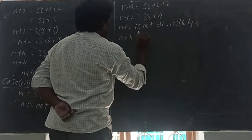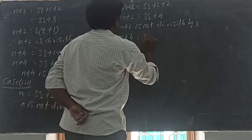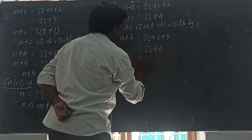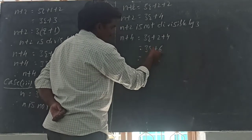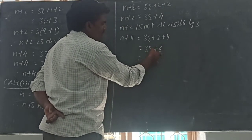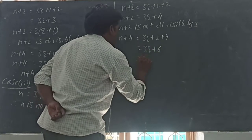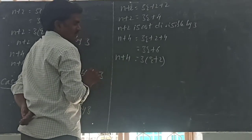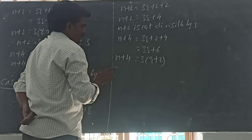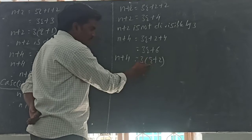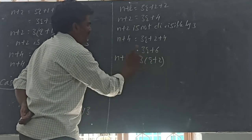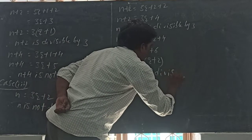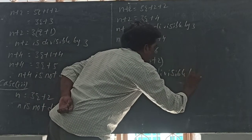Next, N plus 4: N is 3Q plus 2, so N plus 4 is 3Q plus 2 plus 4, that is 3Q plus 6. Taking 3 outside, that is 3 into (Q plus 2). So N plus 4 is a multiple of 3, which is nothing but divisible by 3. So therefore N plus 4 is divisible by 3.